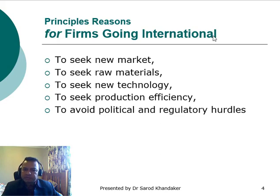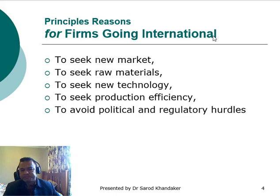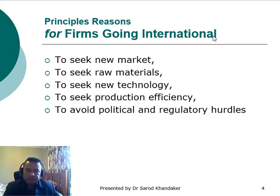What are the reasons for a firm going international? There are several factors. The firm wants to go international to get opportunities in the international market and use cheap labor, raw materials, and existing new technology. The main factors include: number one, seeking new markets. For example, a firm located in Australia or the USA may want to expand its business to the Asian market and set up a company locally in a country like Bangladesh or Vietnam.